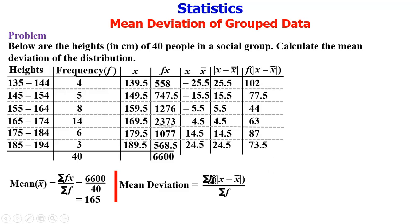So for this we are going to sum up the values we've gotten in the last column. We already have this which is 40. So in this last column from our calculator we have 447.